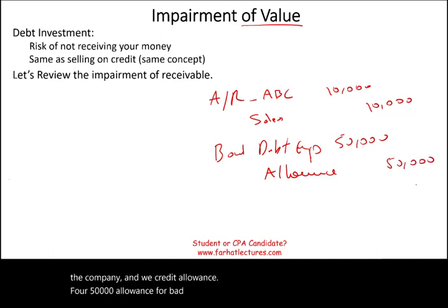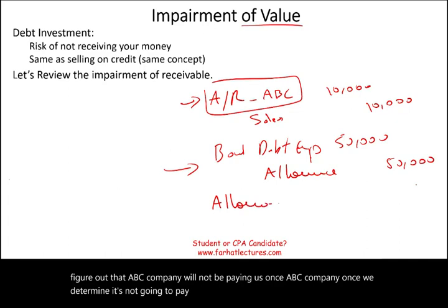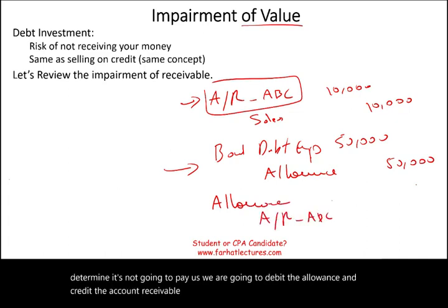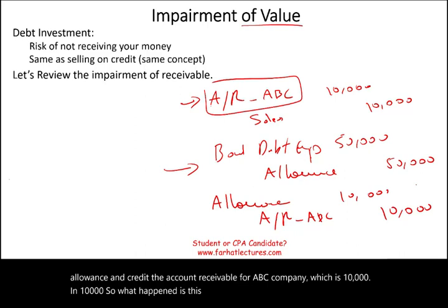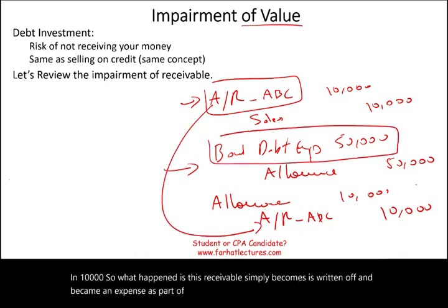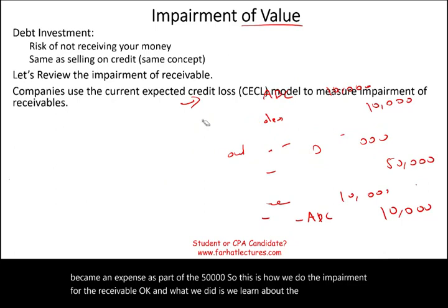At some point after we estimate, we may determine that ABC Company will not be paying us. Once we determine it's not going to pay, we debit the allowance and credit accounts receivable for ten thousand. The receivable is written off and becomes an expense as part of the fifty thousand. This is how we do the impairment for the receivable.